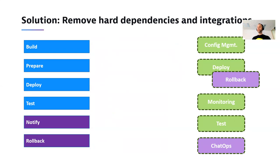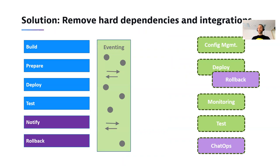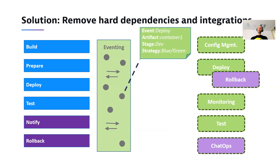If you have the process on the left and the capabilities on the right with a process orchestrator in the middle, you need some way for them to communicate — and this is where eventing comes in. Keptn uses an event-based model, just as when we break monolithic applications into smaller services and use eventing to connect them. We define the process, and as we execute it, Keptn sends the right event at the right moment — for instance, 'I need somebody with the capability to deploy container number one in dev with a blue-green deployment strategy.'